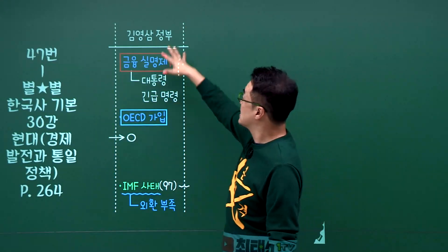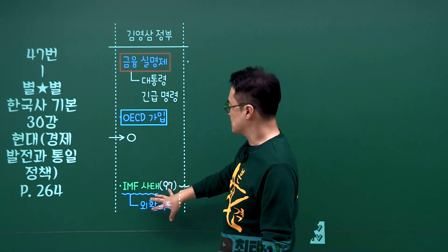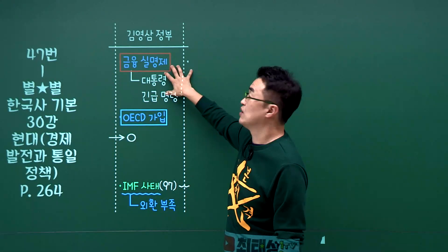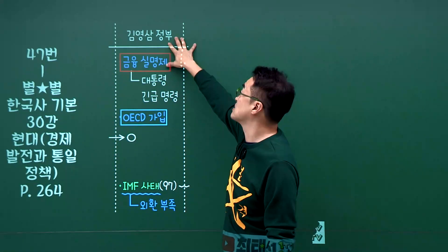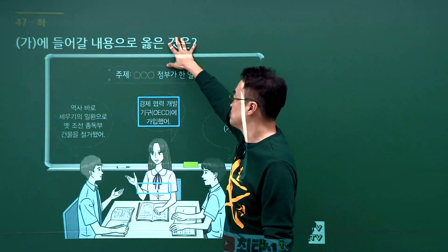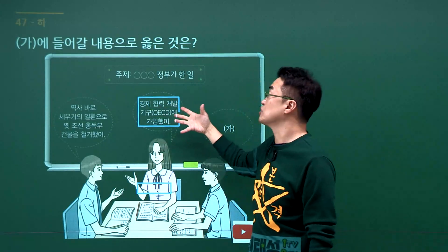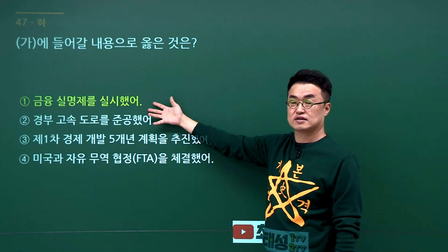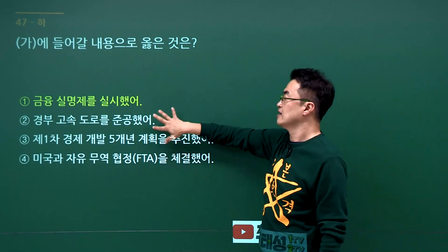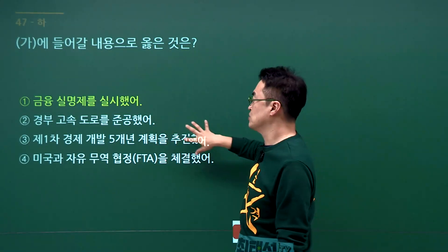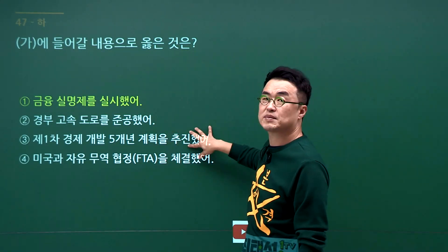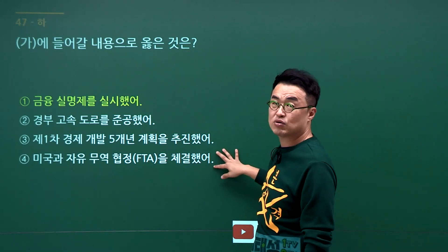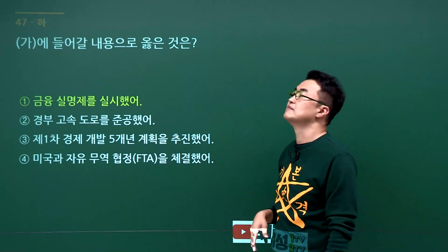김영삼 정부 문제입니다. 김영삼 정부 때 OECD에 가입했고 금융실명제를 실시했습니다. 문제에서 OECD 가입이 나왔으니 김영삼 정부이고 답지는 금융실명제입니다. 1번을 고르시면 됩니다. 경부고속도로 준공과 1차 경제개발 5개년 계획은 박정희 정부, 미국과의 FTA는 노무현 정부입니다. 정답은 1번입니다.